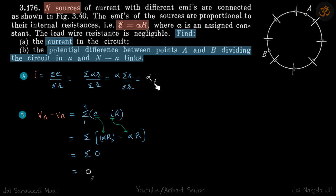So current is constant, its value is alpha. Now VA minus VB across any two points. So if we are going in this way, we can write that this potential difference is sigma 1 to n.